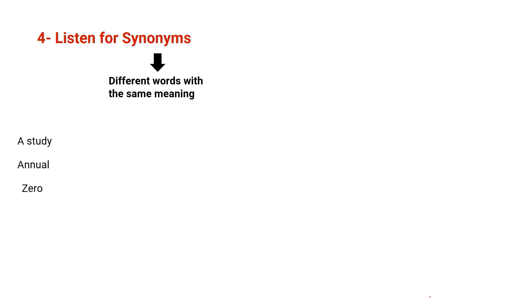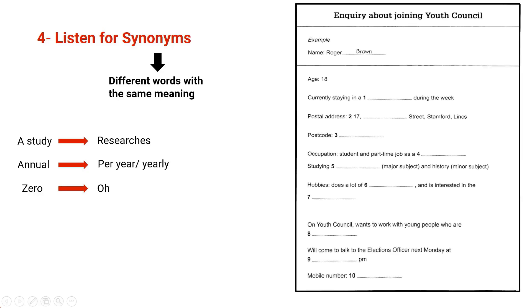For example, here are three words like study, annual, and zero. A word like study, you might have it in the question, but in the audio you hear a word like research. The word annual in the question, you might hear a word like per year or yearly. Zero, you can hear nil. And let me show you how we do this. This is a card inquiry about joining youth council. Name Roger Brown, age 18. The first question here: currently staying in. So in the audio, you might hear a different word that means staying, like for example, accommodation or the verb live.